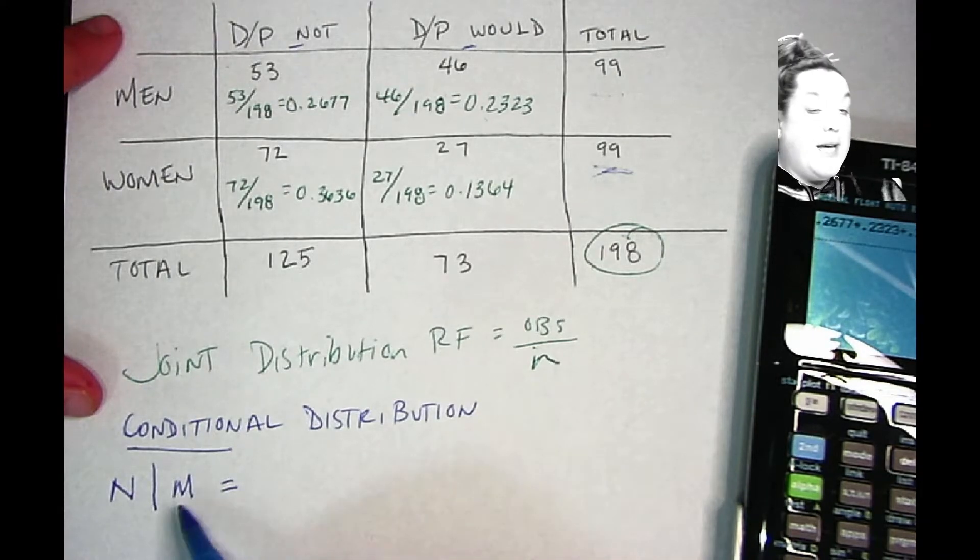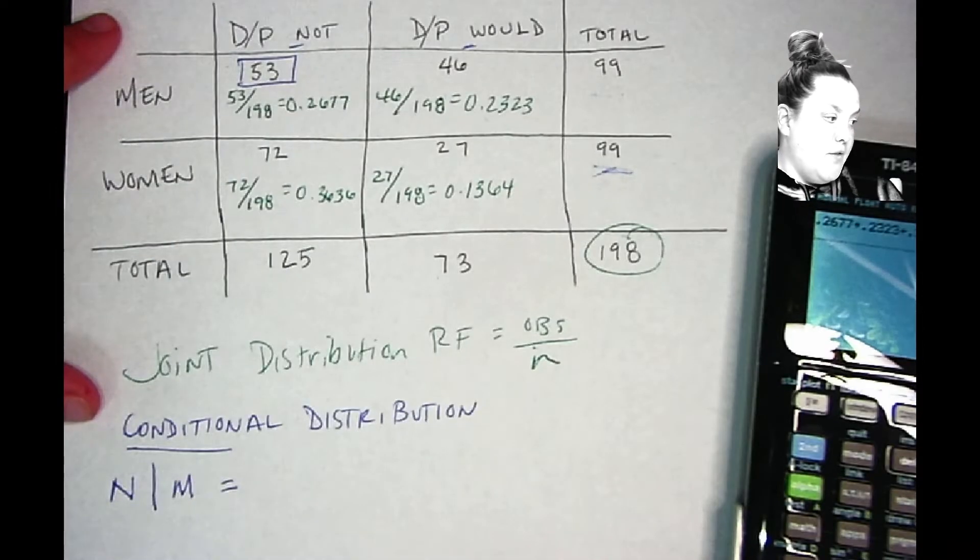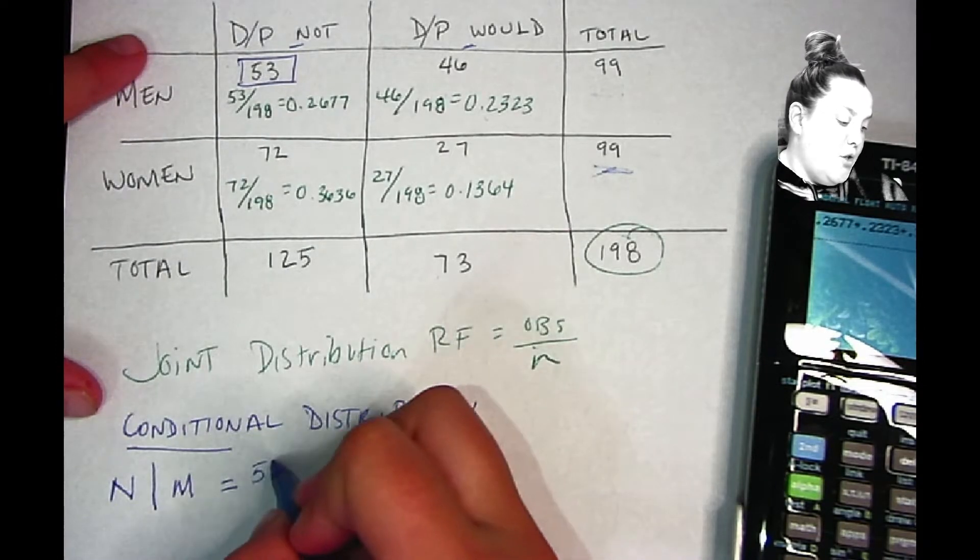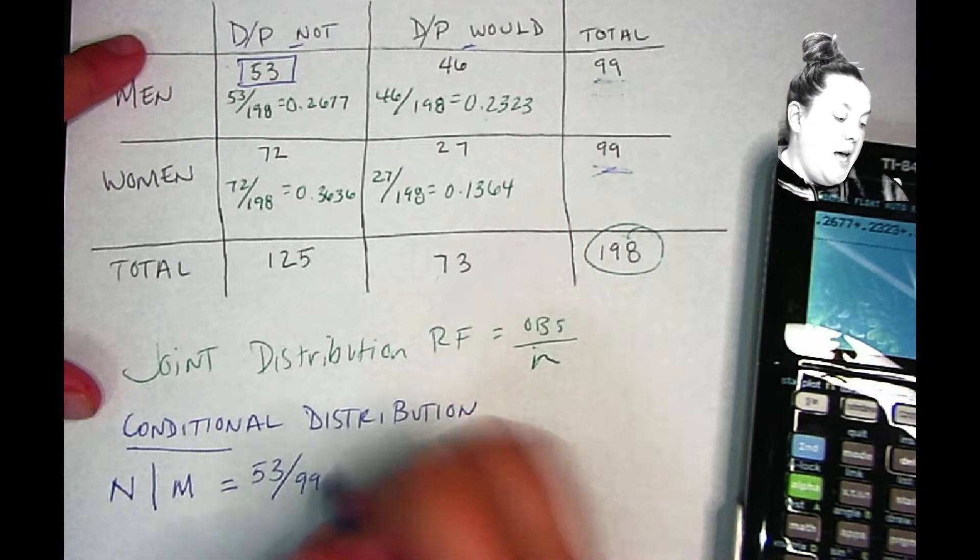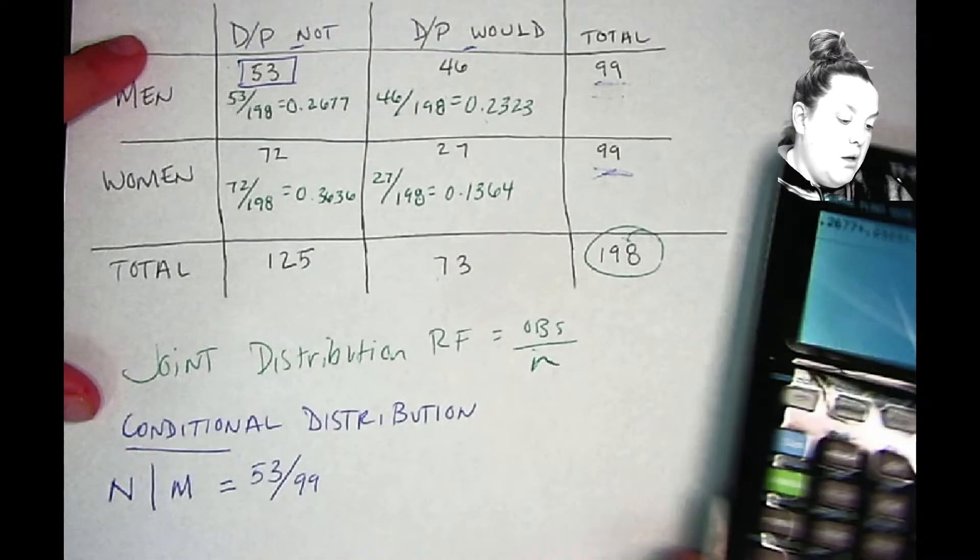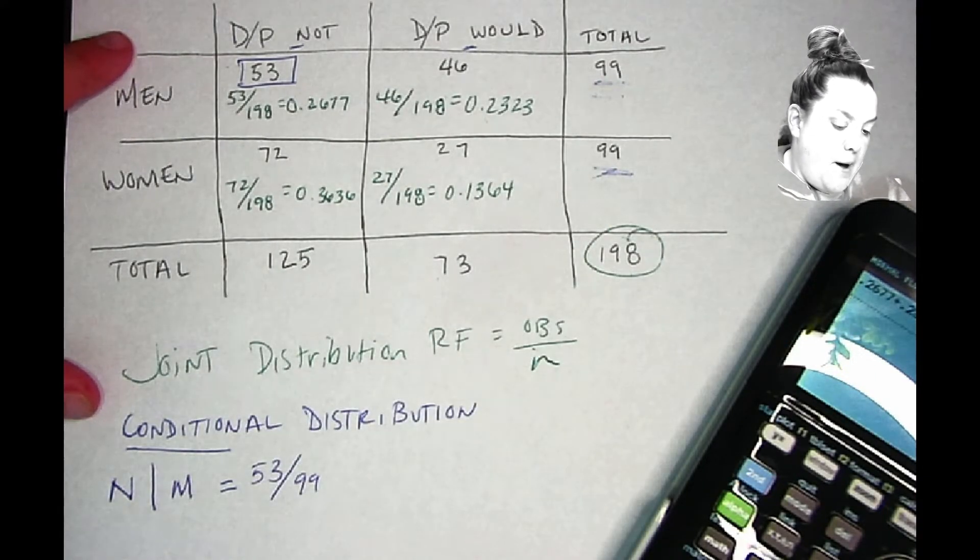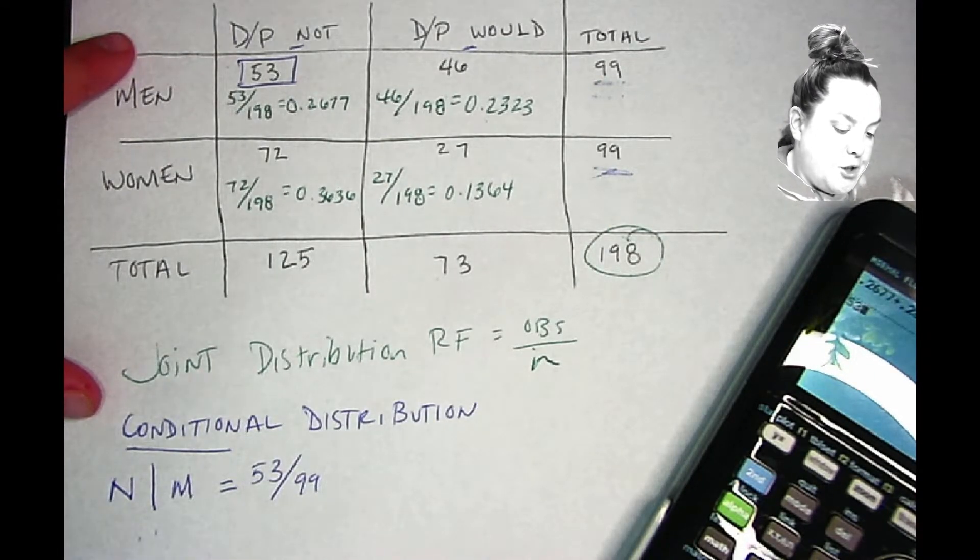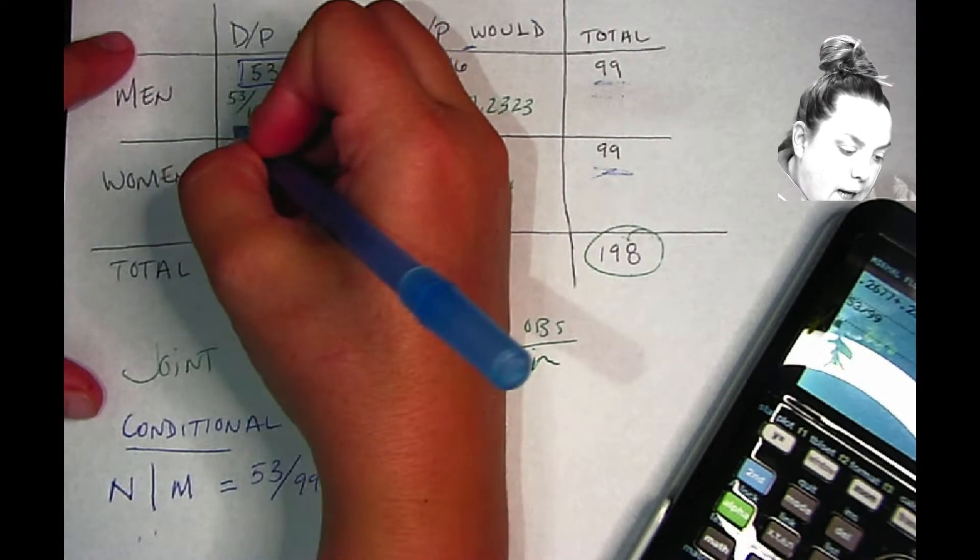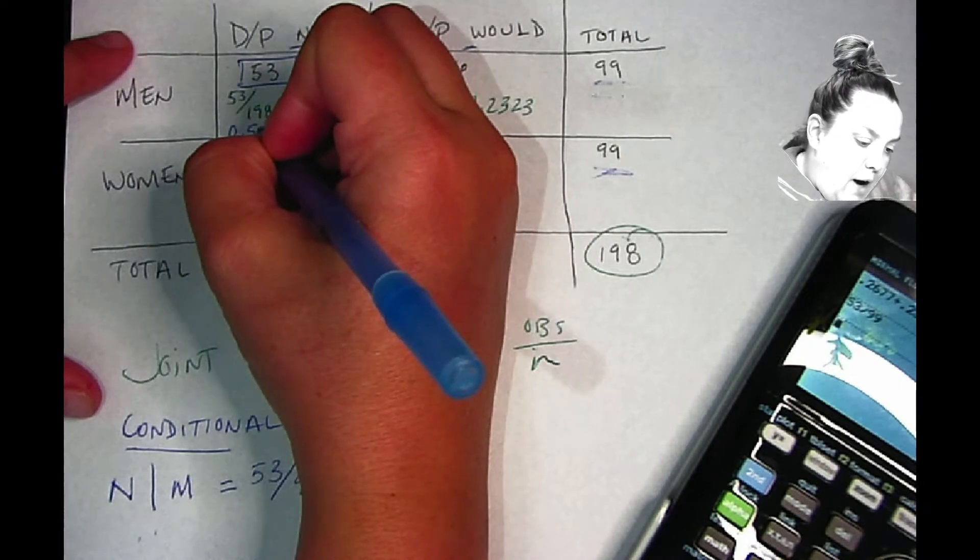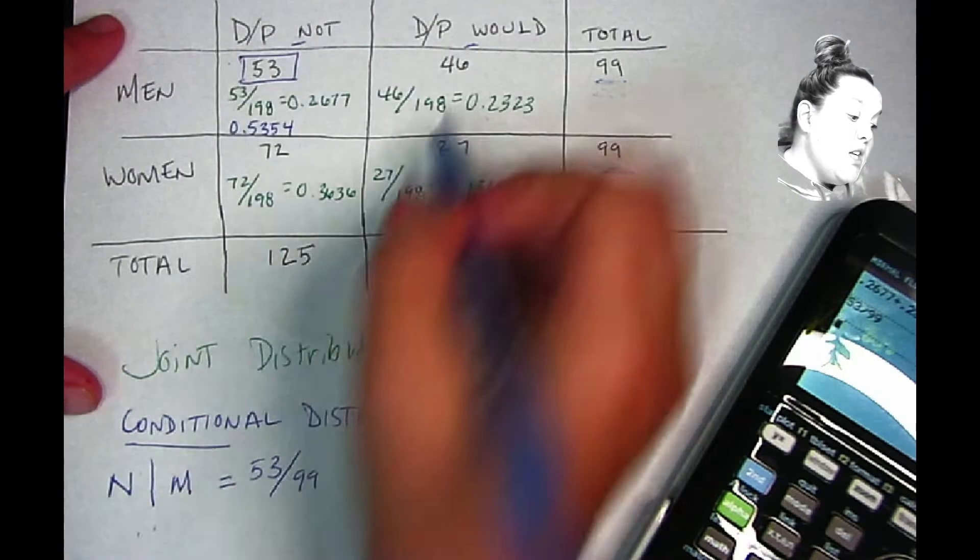We have would not ride in a driverless passenger vehicle given that they're male. So we still use that observed count, so I have 53, but this time I use 99 because that is the condition on this, and that is the total that's appropriate for these given situations. So I have 53 divided by 99, and this comes out to be 0.535.